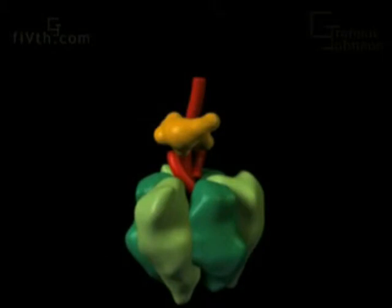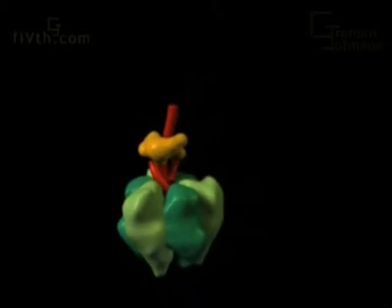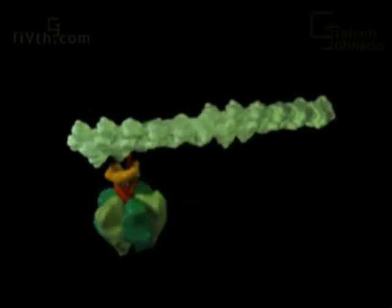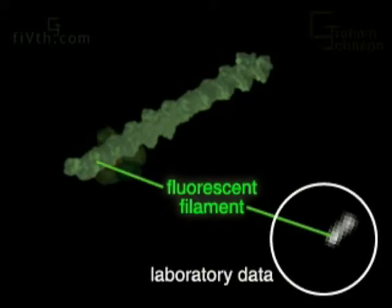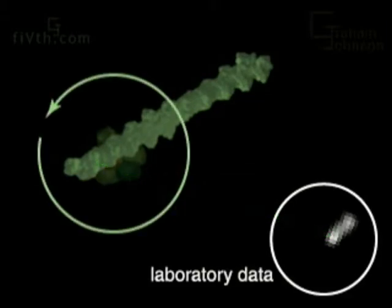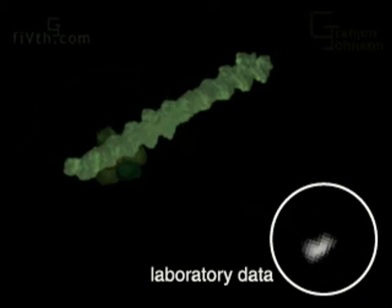To show the rotation of the central shaft, a short fluorescent actin filament was experimentally attached to it. Single filaments attached to single F1 ATPases can be visualized in the microscope. When ATP is added, the filament starts spinning, directly demonstrating the mechanical properties of this remarkable molecular machine.